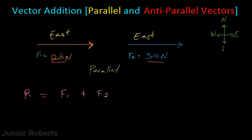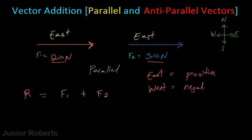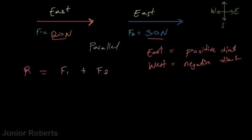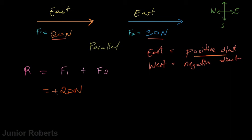In order to add these two vectors we have to consider both their magnitude and their direction. Since both vectors are going to the east, we can make the convention that east is our positive direction. Any vector going east is going in the positive direction. So F1 is 20 newtons going east, and since east is our positive direction, we write this as positive 20 newtons — the positive sign indicates direction.